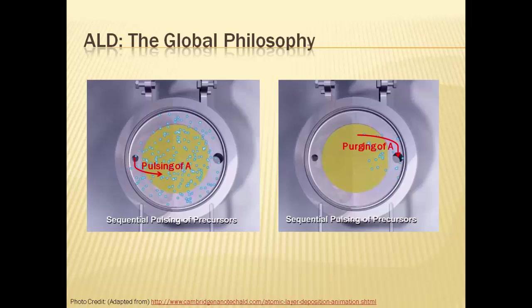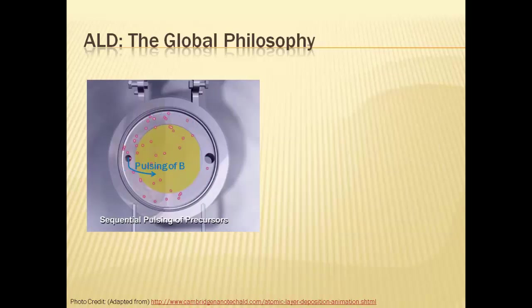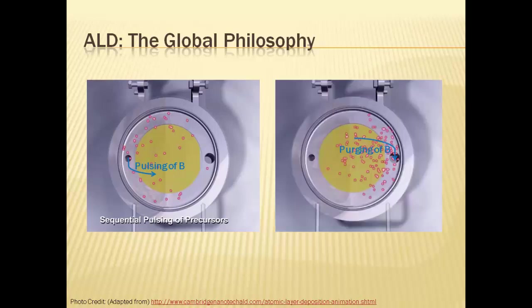As we shall understand better in a future slide, the precursor becomes excess when the first layer becomes saturated leading to self-limited single atomic layer growth.